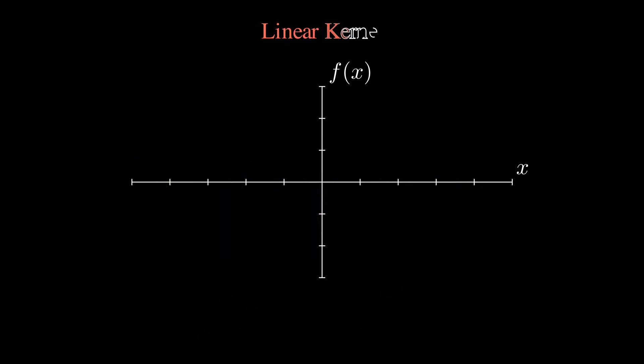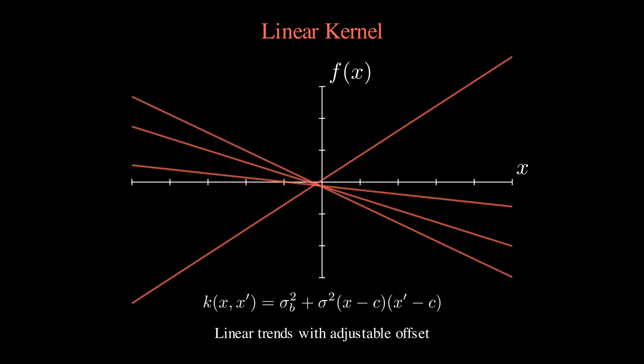Finally, we have the linear kernel and, as you can see, this simple kernel gives us straight lines with varying slopes and intercepts that extend infinitely in both directions. The formula is k(x, x') = σ_b² + σ²(x - c)(x' - c). This kernel is ideal when you suspect your data follows a linear trend or when you want to capture global trends in combination with other kernels.